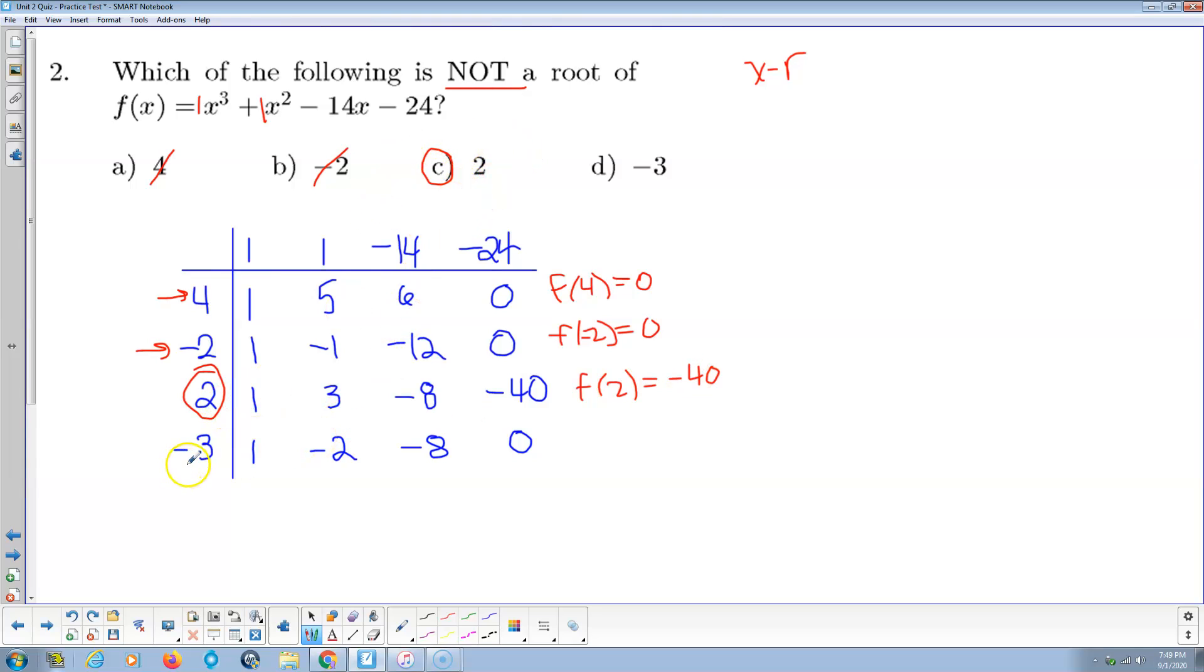There's my answer. And then just to eliminate the last one. Negative 3 times 1 is negative 3. Plus 1 is negative 2. Positive 6 minus 14 is negative 8. Positive 24 minus 24 is 0. So this guy is a root. So we've eliminated all the incorrect answers and basically proven that c is the correct answer.